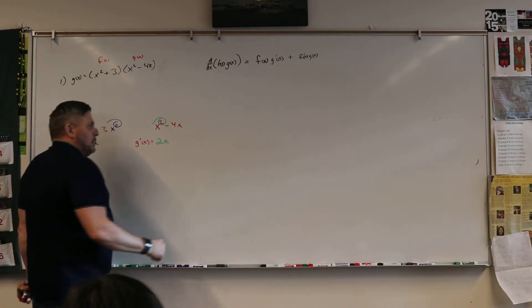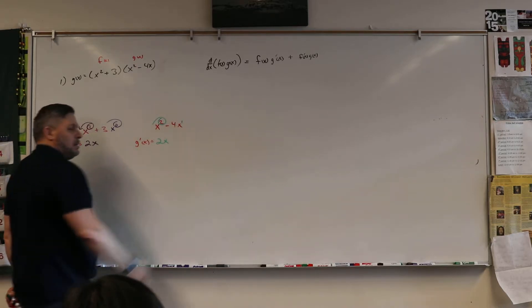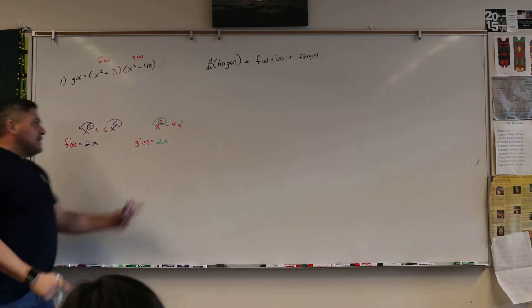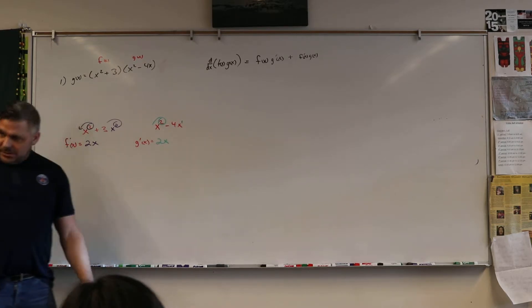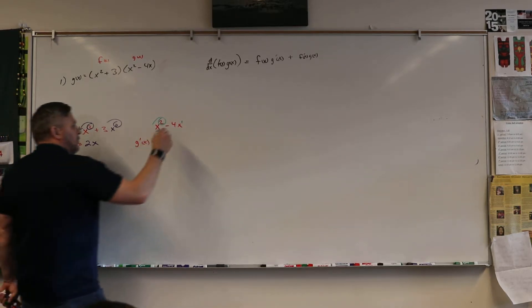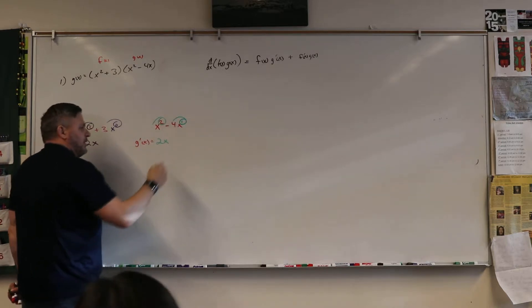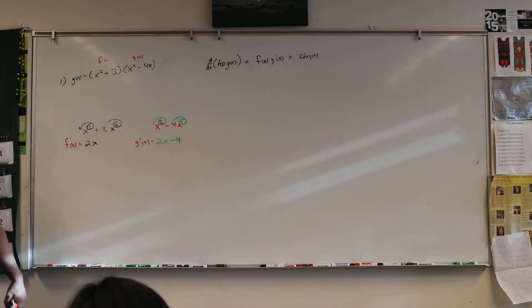Because there's actually a 1 here. That's a hidden 1. So we're going to take that 1 times 4 and get... There you go. So that's the derivative. So that's the power rule.